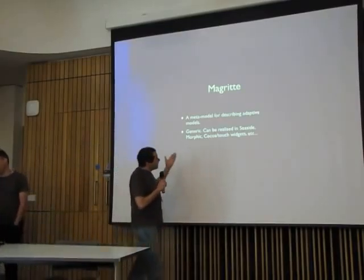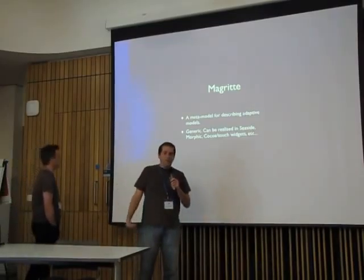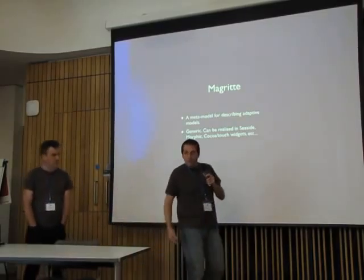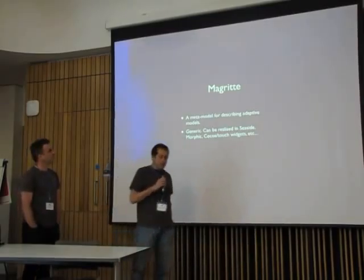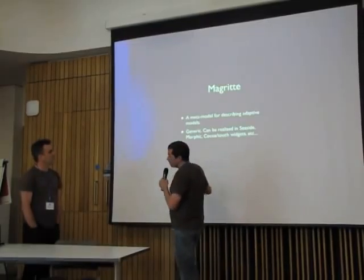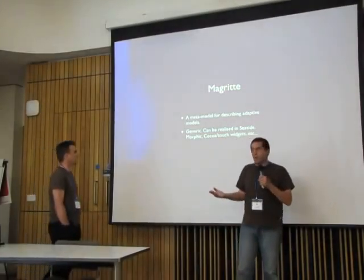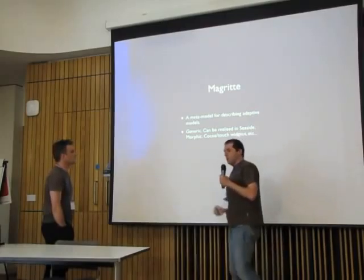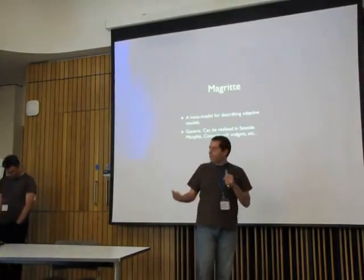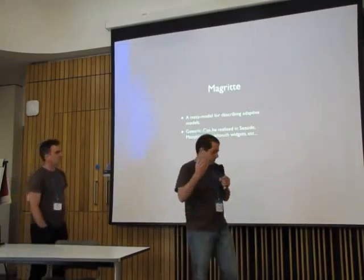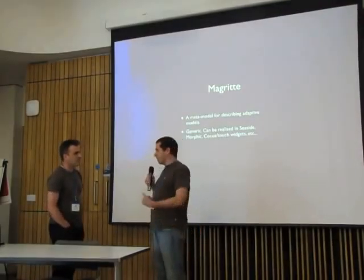Magritte is a meta-model for discrete adaptive models. As Lucas says, it usually causes meta-confusion because you don't know what you are actually describing — a model or describing Magritte itself. But it is useful to describe the main object models in a common way, so you can interpret that object in different behaviors.